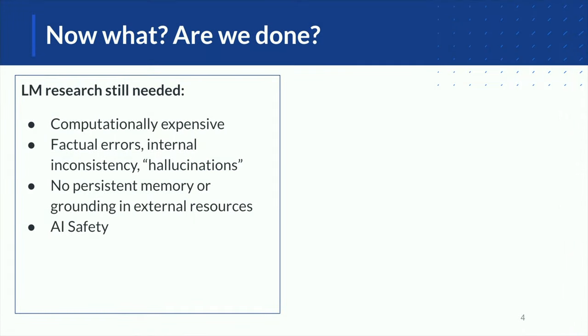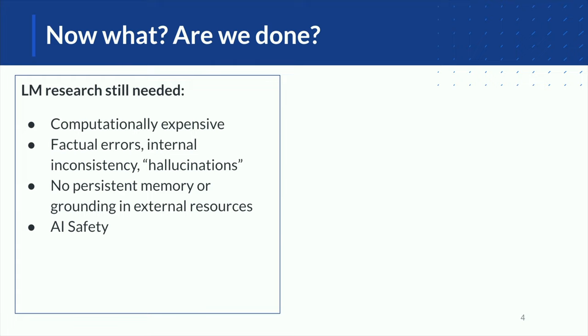Everybody these days is talking about their impact on society, their risks, their economic impacts, and so on. But where are we now as researchers in AI? Are we done? No, because there are still many research challenges that need to be resolved. These models are computationally expensive. You still see they make factual errors or so-called hallucinations.